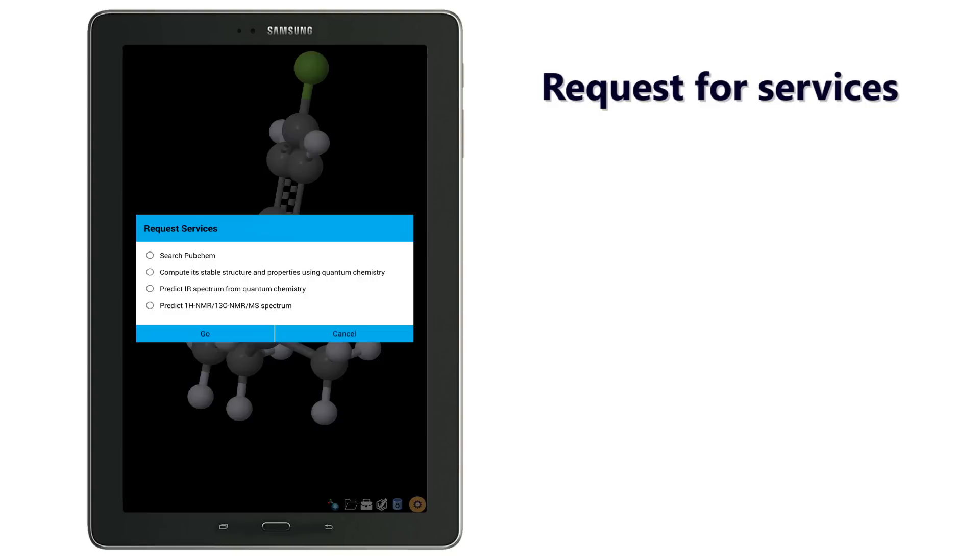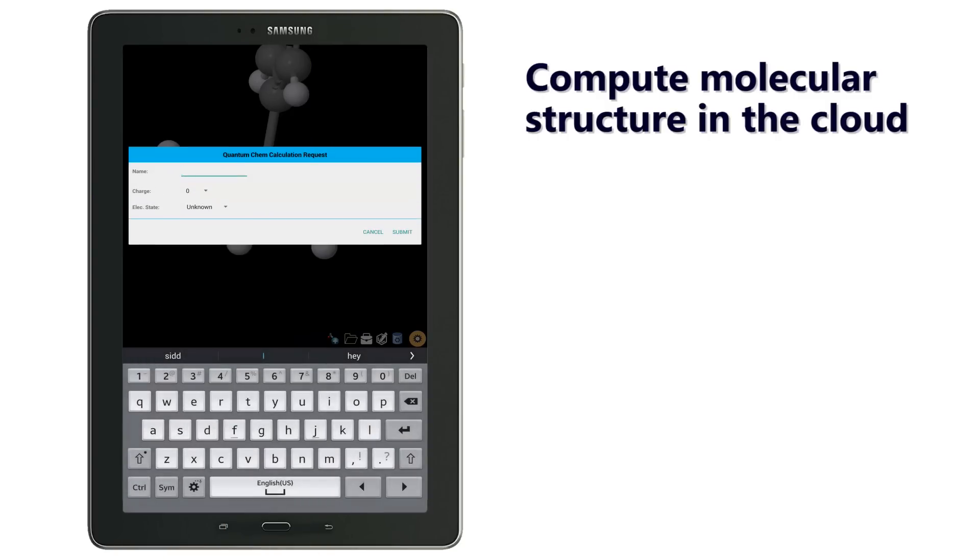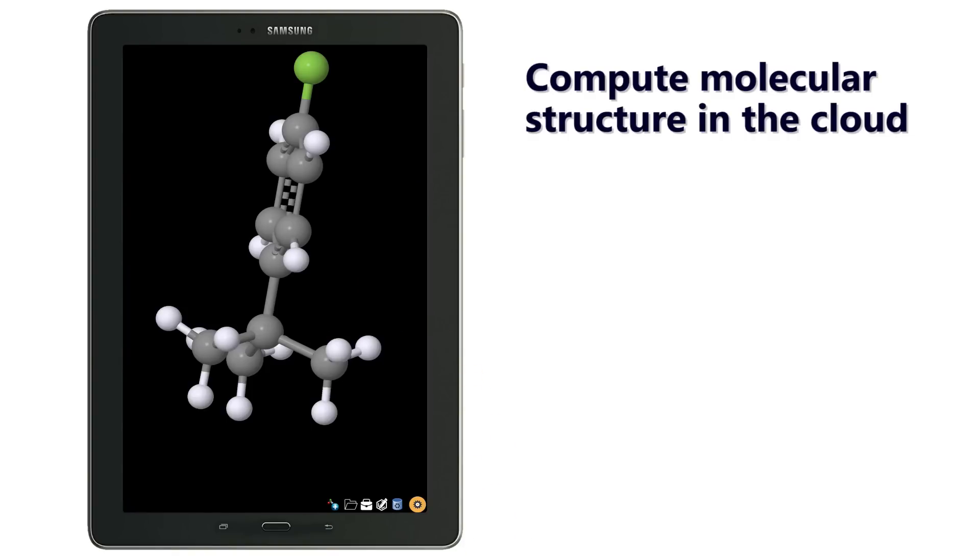Predict its infrared spectrum or proton and C13 NMR or mass spectrum. Let us compute the molecular structure and properties first. We can name the molecule. If you know the molecule charge or spin state then provide the details here. Finally, click submit. This will submit the job to the cloud.